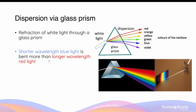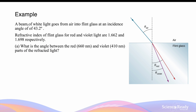To summarize: dispersion is the phenomenon that occurs when white light undergoes refraction. It occurs because each colored component of white light has a different wavelength and frequency, and therefore they are affected by refraction to different extents. Shorter wavelengths such as violet and blue are affected more, so they are bent more towards the normal and have a smaller angle of refraction compared to red and orange, which have longer wavelengths.